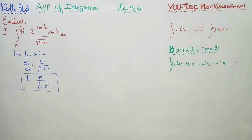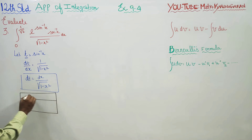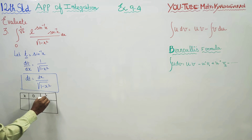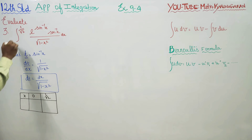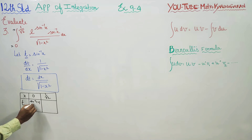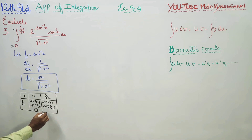Now in the original sum, we need to change the limits. The x limits need to be converted to t limits. The x limit starts at 0. Using t = sin⁻¹x, when x = 0, t = sin⁻¹(0) = 0. The upper limit is x = 1/√2, and sin⁻¹(1/√2) = 45° = π/4. So these are my new limits: 0 to π/4.